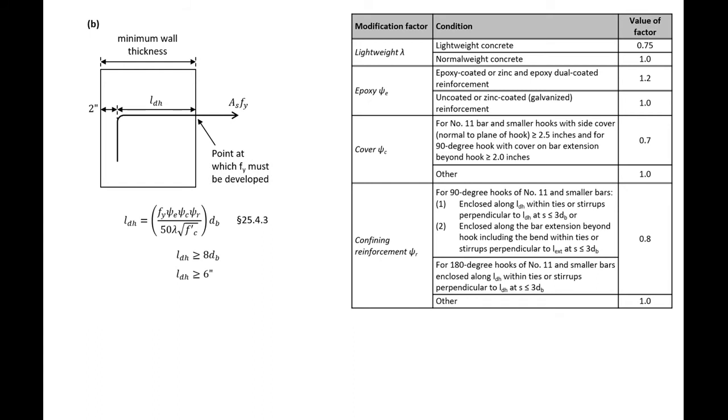Finally, we will find the minimum wall thickness if we used a hooked bar and we'll assume that we have the ACI standard geometry for our hook. So we need to figure out our different factors.